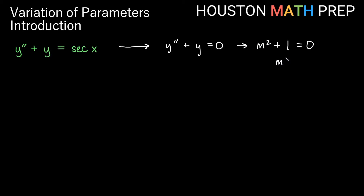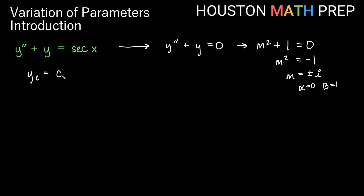Subtracting 1 from both sides gives m² = −1, and taking the square root gives m = ±i. That gives complex values with α = 0 and β = 1, so our complementary function is y sub c = c1·cos(x) + c2·sin(x).